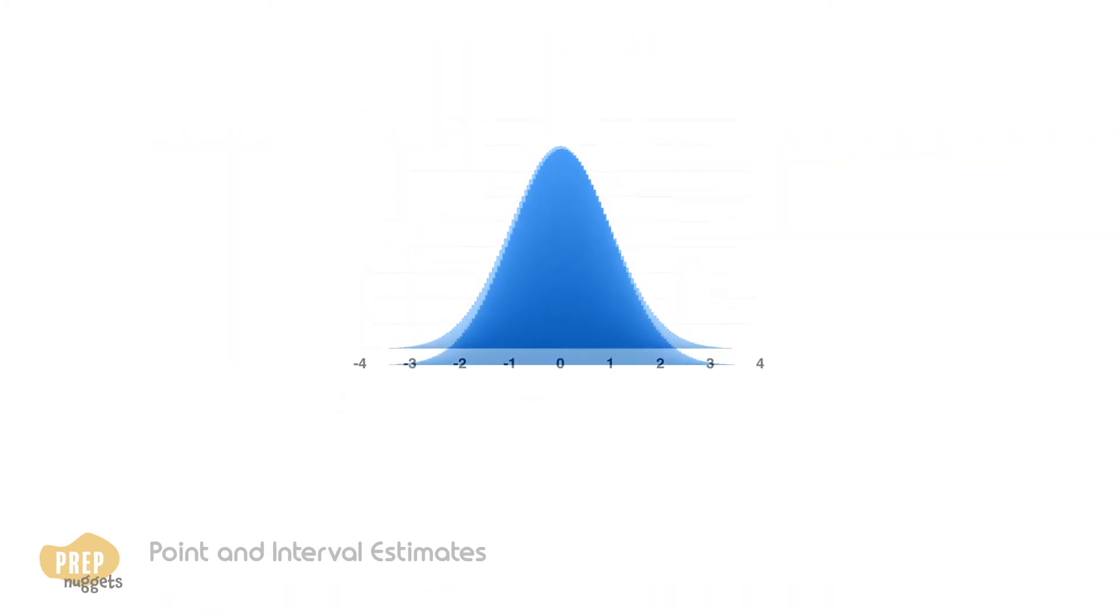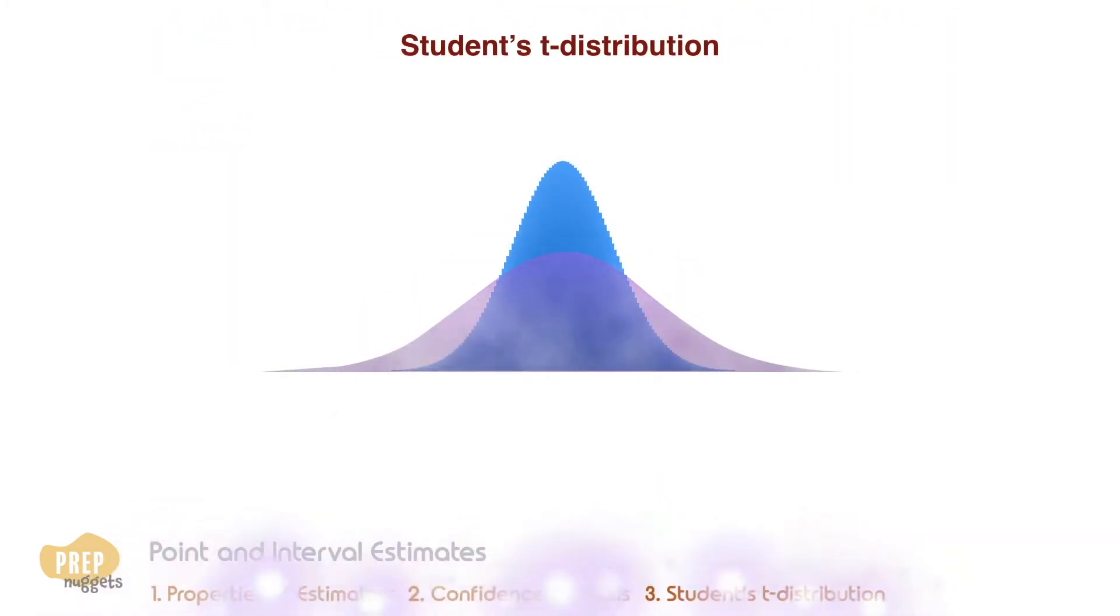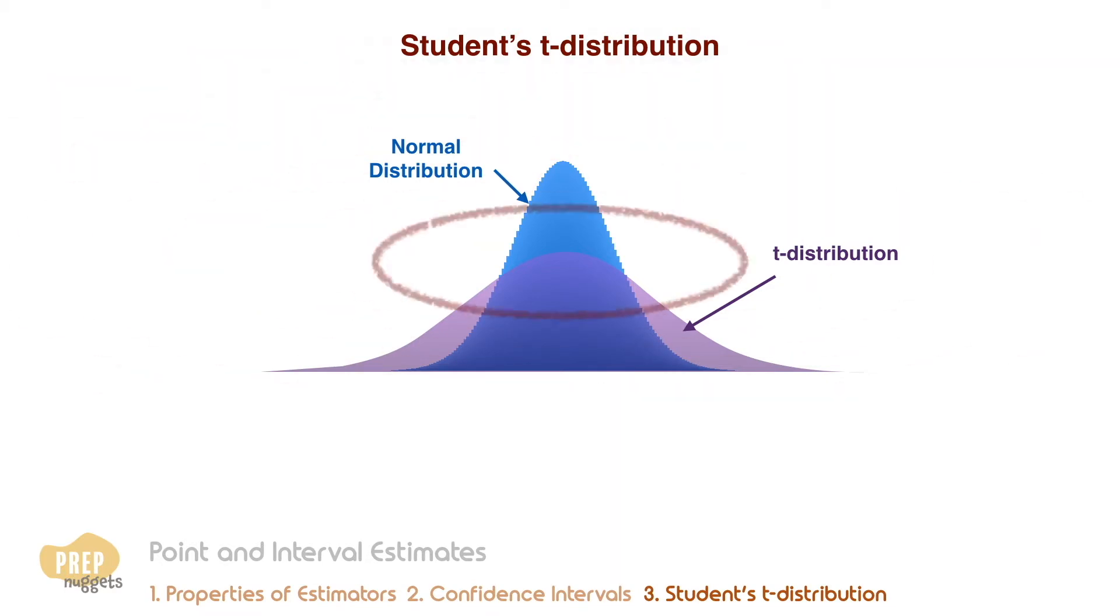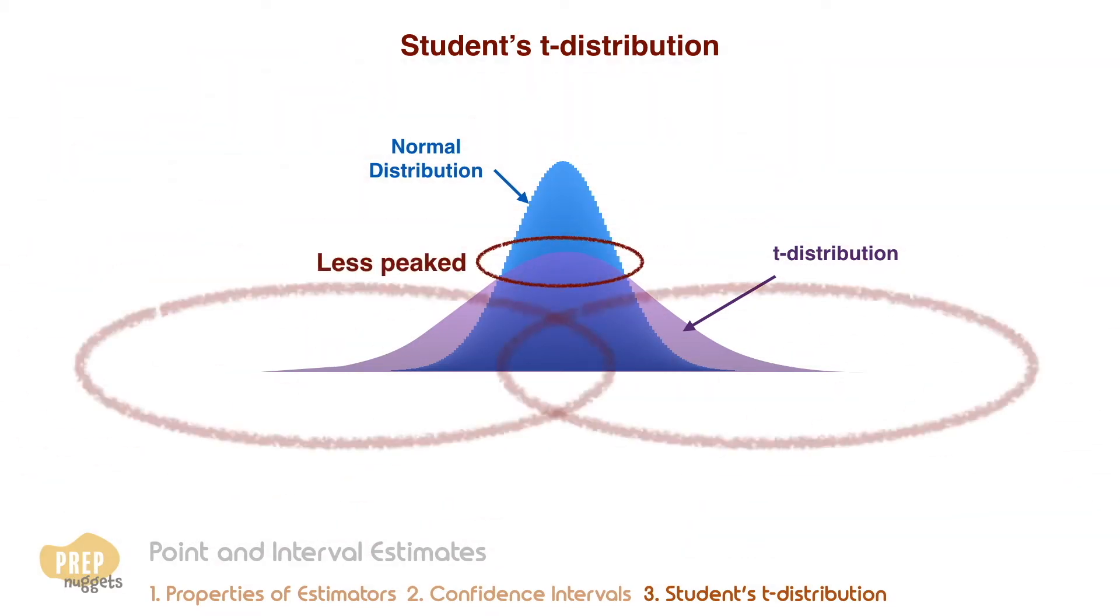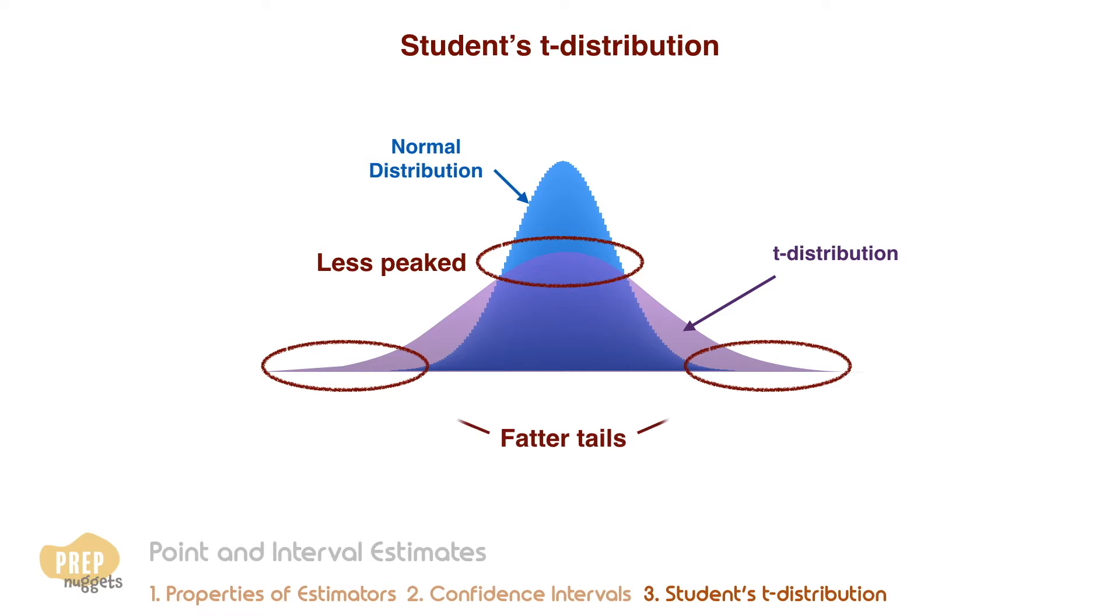The student's T distribution is an alternative to the Z distribution. It's used when the Z statistic is not appropriate to use. It's characteristically less peaked and has fatter tails than the normal distribution.